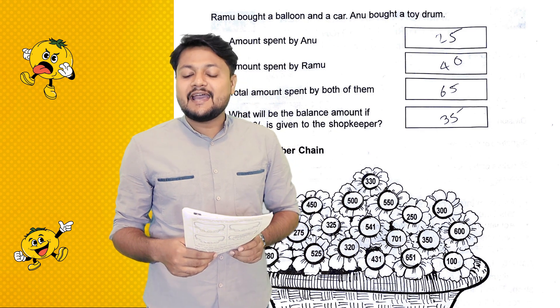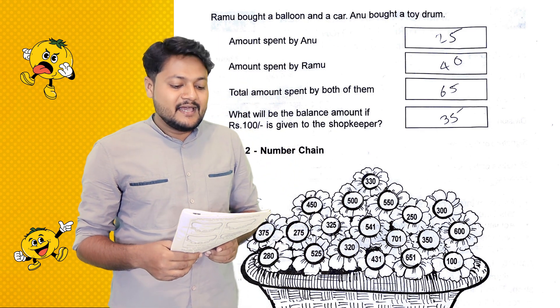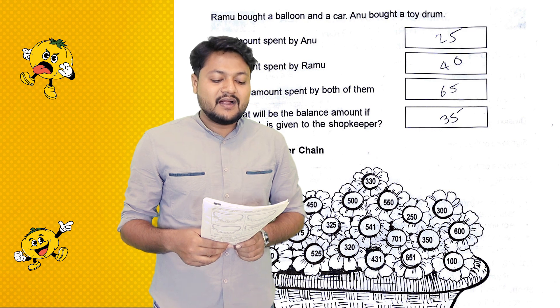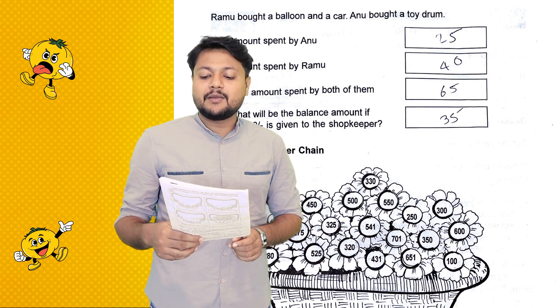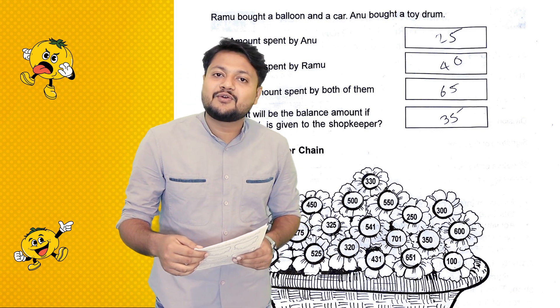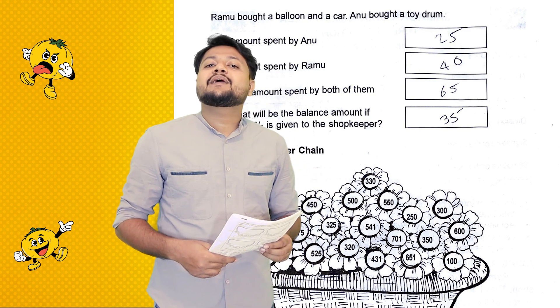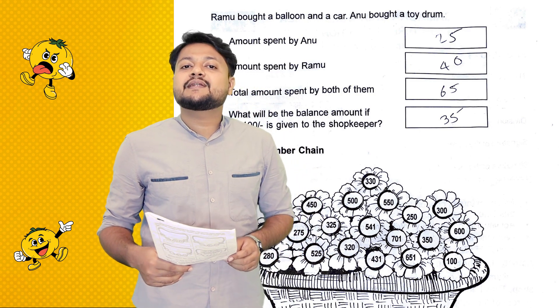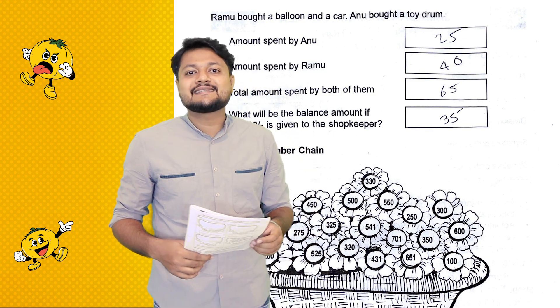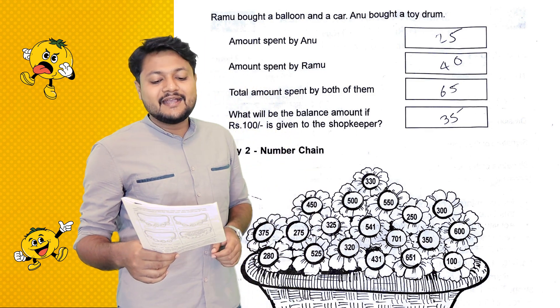What will be the balance amount if a 100 rupee note is given to the shopkeeper? The balance amount: 100 minus 65, that is equal to 35 rupees.